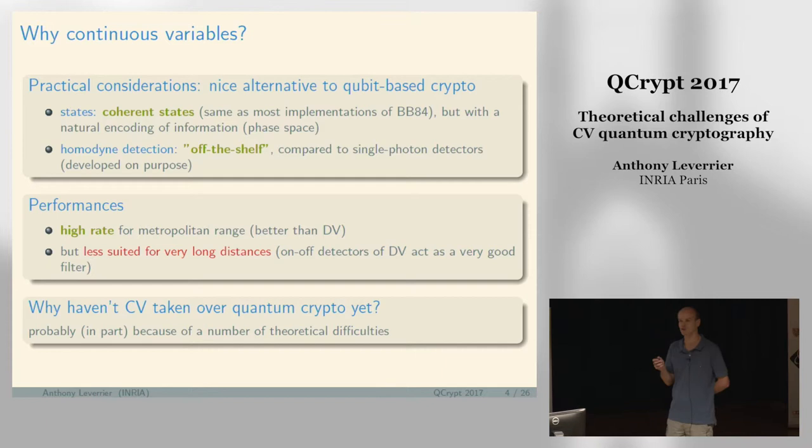In terms of performance, continuous variables are not so bad. For metropolitan range, they behave even better than discrete variables. You get very high rate. However, if you want to go to very long distances, probably it's not a good idea. If you want to go beyond 100 kilometers, you should probably stick with BB84 or these kinds of protocols.